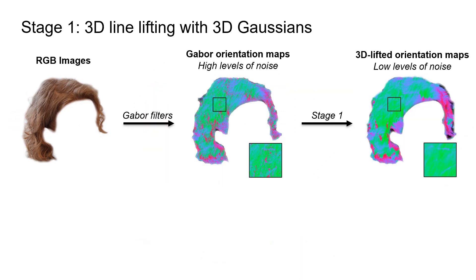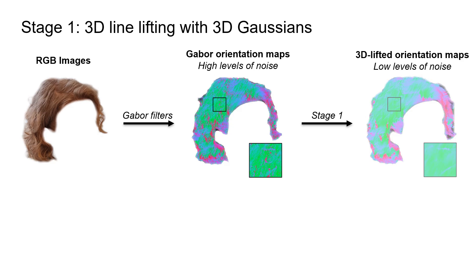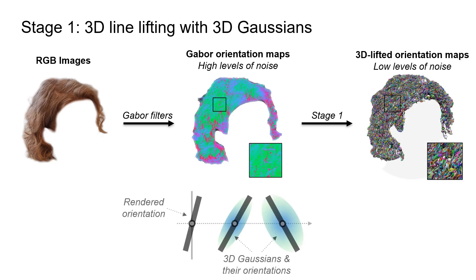During the 3D lifting stage, our goal is to produce accurate orientation maps, which represent the projected line directions of the hair strands. To do that, we rely on approximations of these maps generated from RGB images using oriented Gabor filters. However, these orientation maps contain high levels of noise. To denoise these maps, we conduct a 3D lifting and reprojection with unstructured 3D Gaussians. During this stage, we also optimize the camera parameters to achieve a more accurate 3D reconstruction.